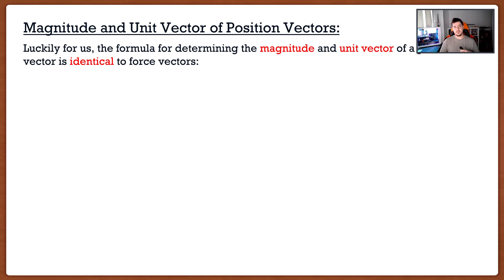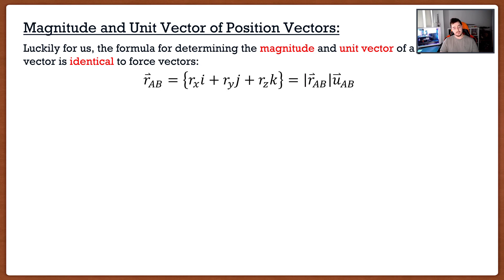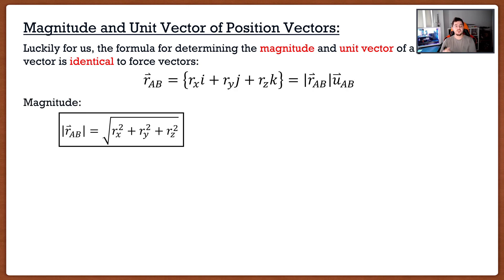Let's talk about the features of a position vector. Remember with force vectors, once we had it in Cartesian vector notation, we could find the magnitude, the unit vector, and all that. Good news: position vectors follow the exact same logic. If I have position vector AB with its three components, I can write it as a magnitude multiplied by its unit vector. The magnitude formula is the exact same as for 3D force vectors: square each component, add them together, and take the square root.